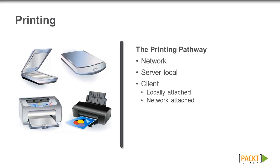The term client printing pathway refers to print jobs that are routed over the ICA protocol through the client device to the printer — either a printer connected directly to the client device or connected through a print server — and spooled on the Citrix online plugin. When using the client printing pathway, a virtual printer is constructed in the session that redirects to the printer object on the client device.